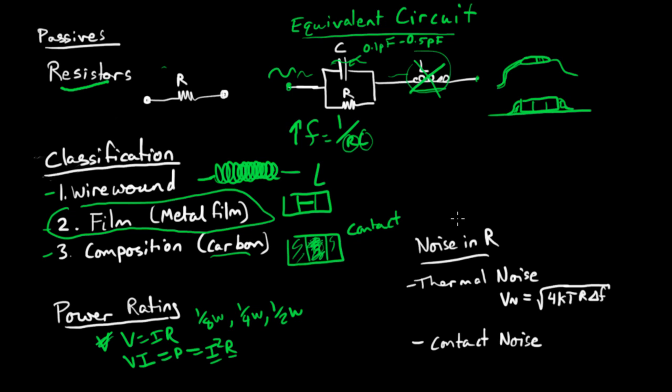Now I'm going to talk about noise in a resistor. The two kinds of noise that I think you should be most concerned with are thermal noise and contact noise. Thermal noise just has to do with the thermal diffusion of electrons around the resistor. And it's going to result in a noise voltage that's equal to the square root of four times the Boltzmann constant times temperature times the resistance value times the bandwidth.